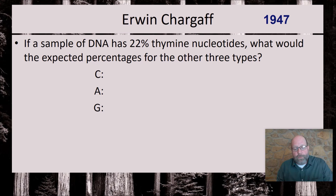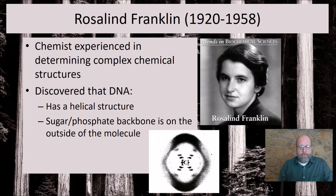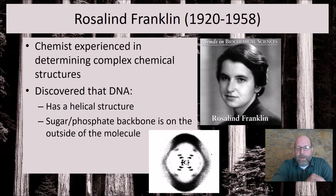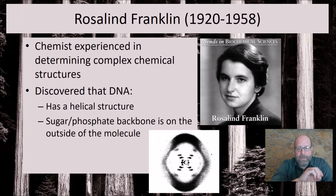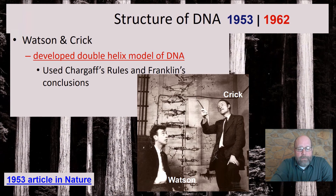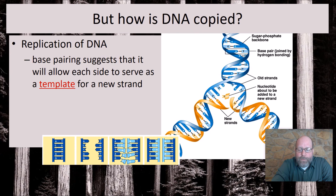Rosalind Franklin was one of probably two or three people on Earth at the time who could take the X-ray crystallography image of DNA she produced. She bounced X-rays off molecules to determine clues about their structure. She figured out that the sugar-phosphate backbone is on the outside of the molecule and that it has a spiral shape. Those two clues, combined with Chargaff's rules, are what Watson and Crick used to determine the double helix structure of DNA.